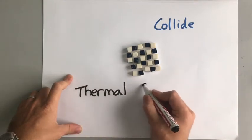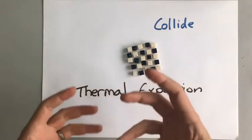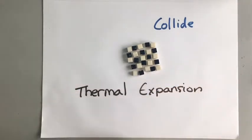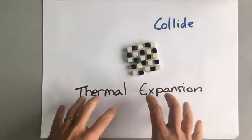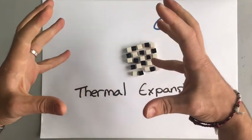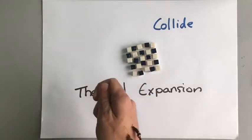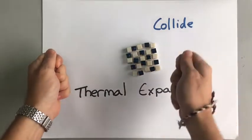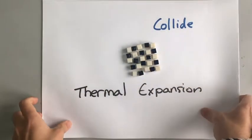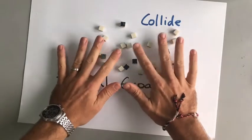Thermal means anything to do with heat, and expansion means it's getting bigger. Thermal expansion happens with everything — solids, liquids, and gases. If you heat up a solid it will get slightly bigger, though it's hard to notice with your eye. Gases expanding is easier to observe: a hot air balloon is an example, and if you put one balloon in hot water and one in cold water, the one in hot water ends up slightly bigger because the particles have more energy, collide more, and spread out.